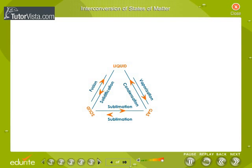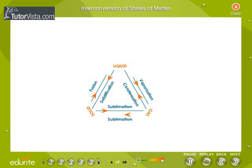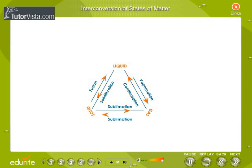Interconversion of states of matter. The three states of matter can be interconverted. Solid on heating or melting becomes liquid, which on condensing or cooling solidifies. Similarly, liquid on heating or boiling turns into the vapor state, and the vapors on condensing liquefy.